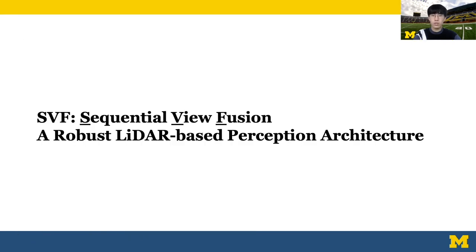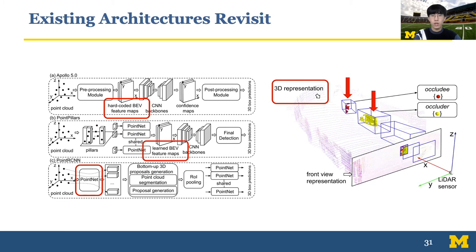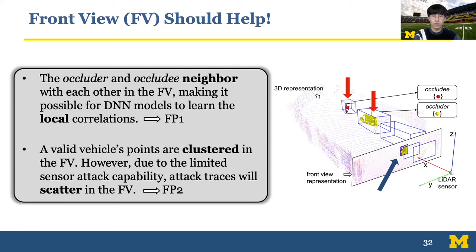Next, I will introduce SVF, sequential view fusion, a general architecture we designed for robust LiDAR-based perception. To design a robust architecture, let's revisit existing state-of-the-art models. We find that all these model designs only utilize the 3D representation of LiDAR point clouds. However, the native representation of LiDAR point clouds is actually the front-view representation, similar to a depth image, which most state-of-the-art models overlook because it is usually noisy. Two insights support using front-view: first, the occluder and occluded are adjacent in front-view, making it possible for DNN models to learn their correlations. Second, a valid vehicle's points are clustered in the front-view regardless of distance, whereas attack traces scatter in the front-view due to limited sensor attack capability, providing opportunities for DNN models to differentiate them.